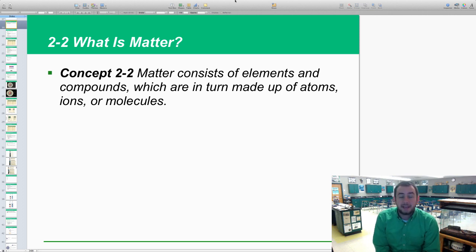Hey scholars, welcome to chapter 2-2. We're looking at more of the chemistry of this chapter: what is matter? We're going to answer our question. Obviously, matter consists of elements and compounds which are made up of atoms, ions, or molecules. We're going to define some of those terms today, just a little refresher on some of your past chemistry that you've learned before. Let's get right into it.